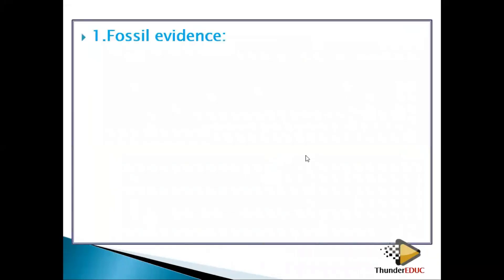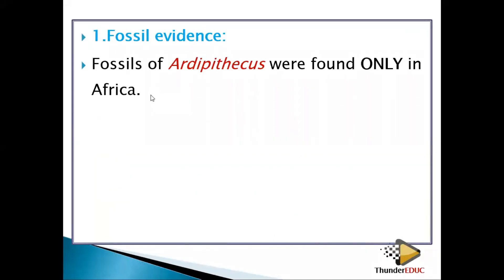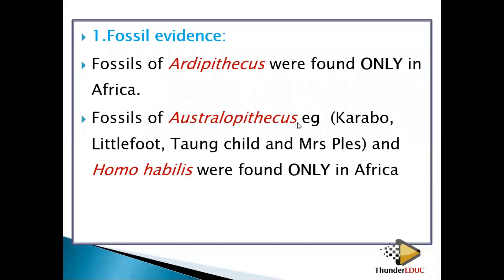For fossil evidence: fossils of Ardipithecus were only found in Africa — remember, Ardipithecus is the first and oldest fossil we study. Fossils of Australopithecus — for example, Australopithecus africanus, Australopithecus sediba, and the Taung Child — were also found in Africa. Homo habilis was also only found in Africa. So all these oldest fossils were found in Africa.